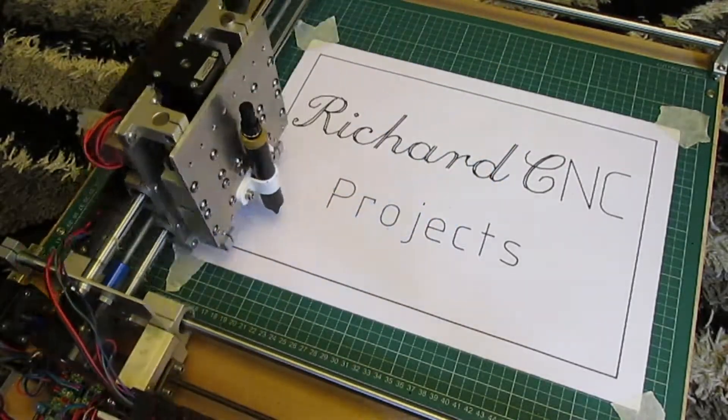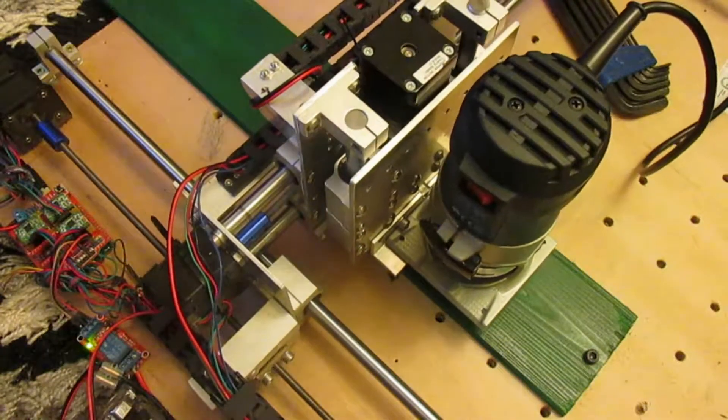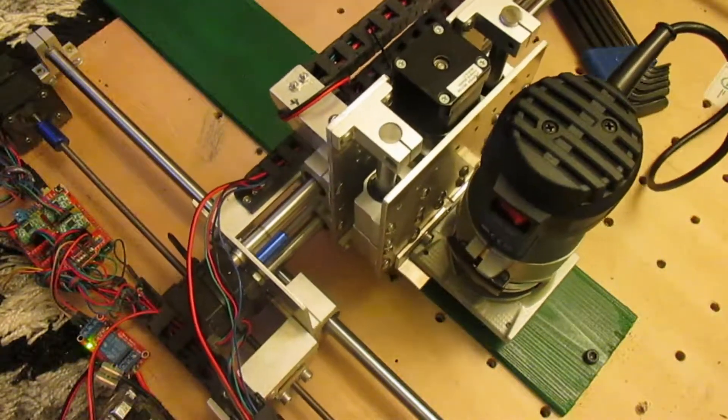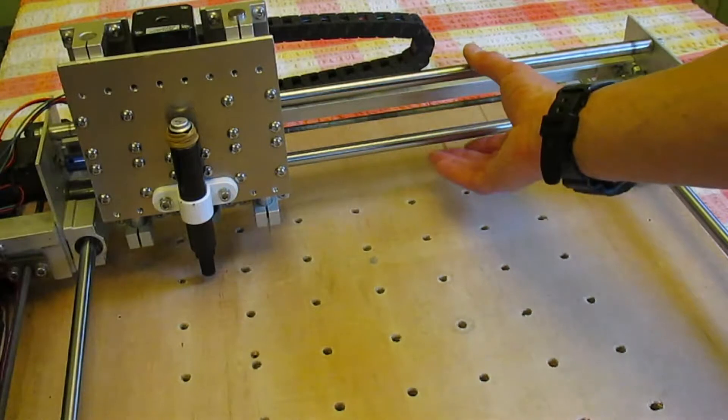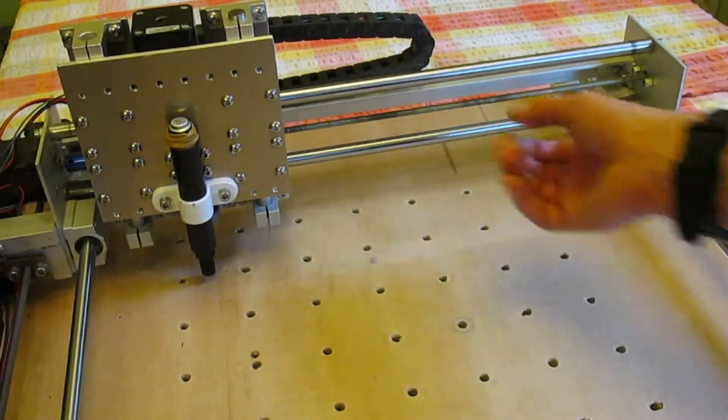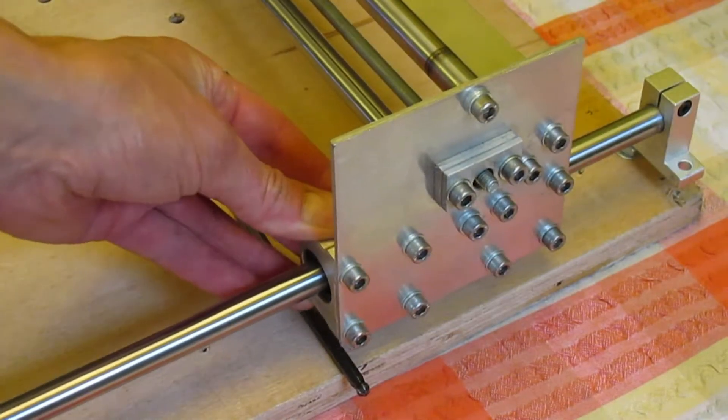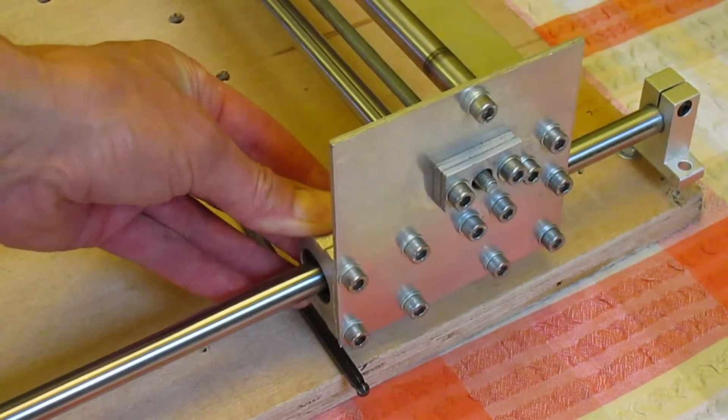This project started out as a plotter, then had a router added which worked fine but the moving gantry had some flex in it which reduced its accuracy, so I'm going to add an extra cloned motor to the x-axis.